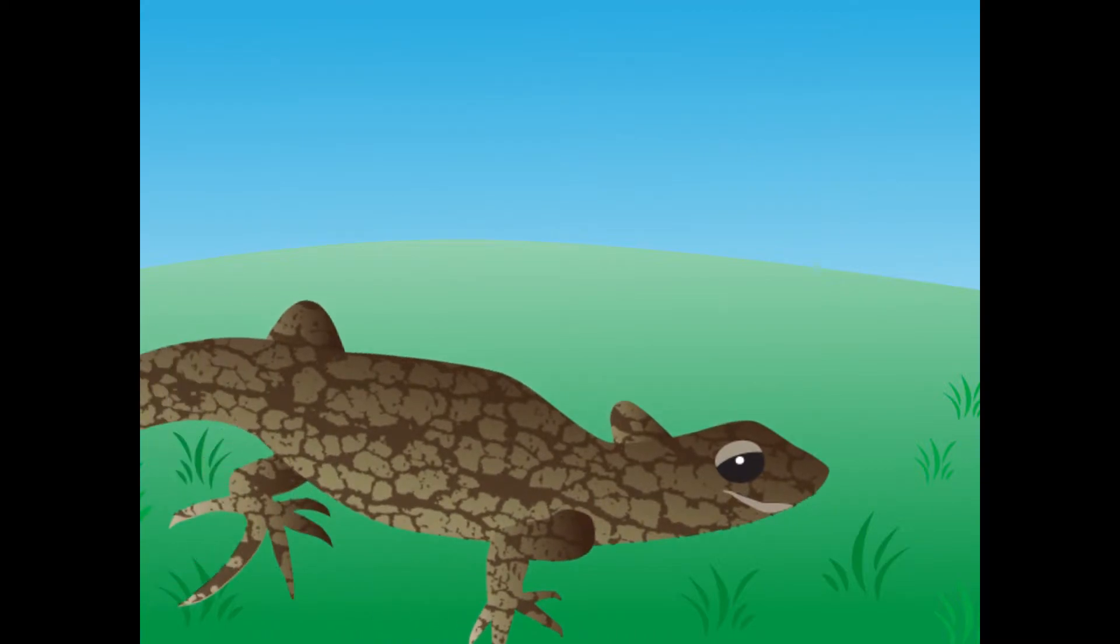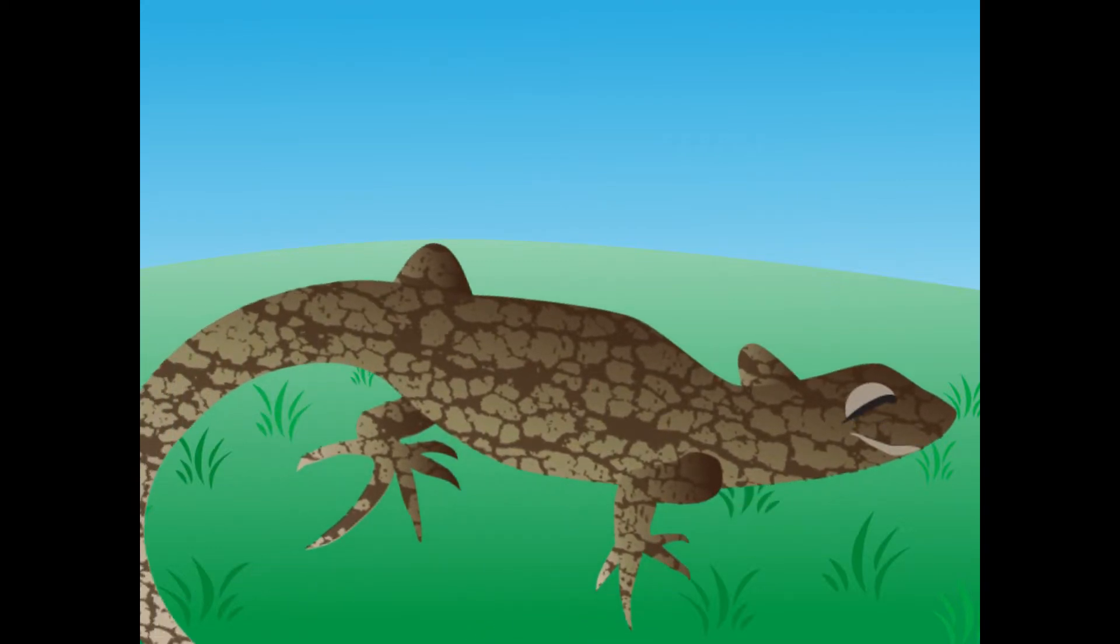The common lizard is an insectivore, meaning it prefers to eat bugs, including ants. Lizards are cold-blooded, so they like to lie in the sun to soak up warmth.